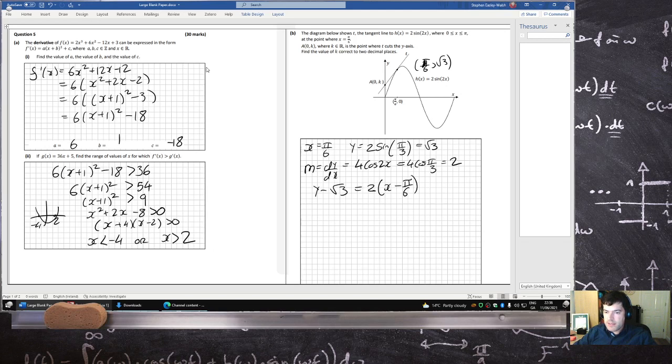And we want to find where it crosses the y-axis, so x is 0. So y minus root 3 equals minus pi over 3. So y equals root 3 minus pi over 3, two decimal places.